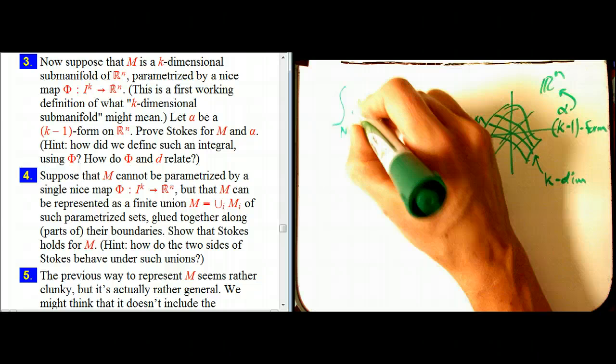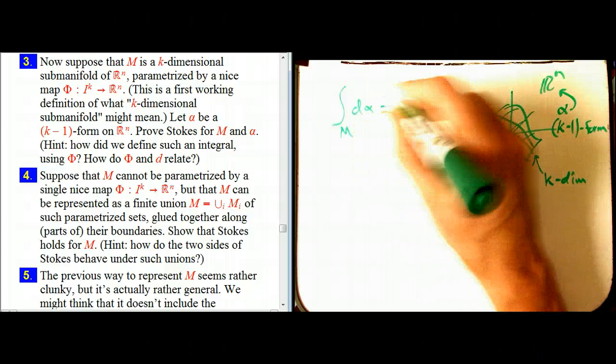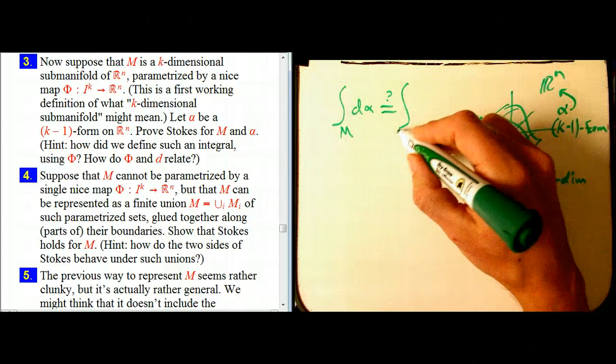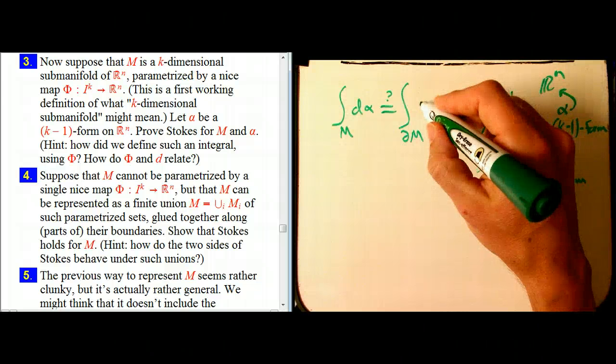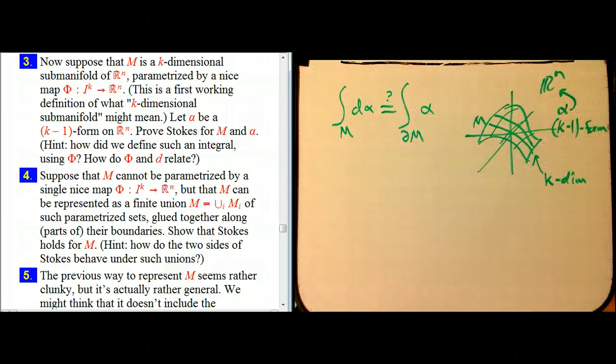And so that makes it possible to integrate over M the integral of D of alpha. And the claim is going to be that that's the integral over the boundary of M, which is then going to be k-1 dimensional of alpha.